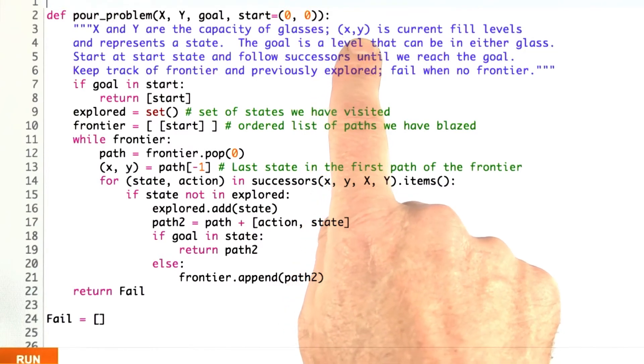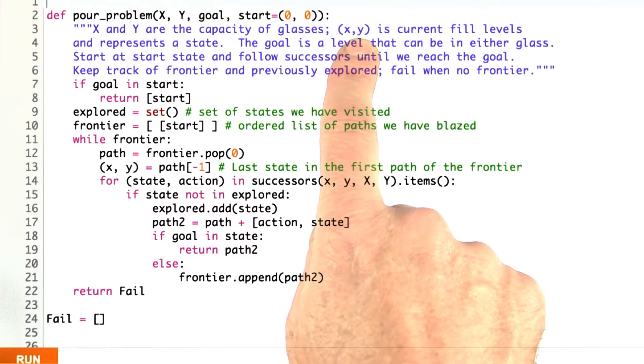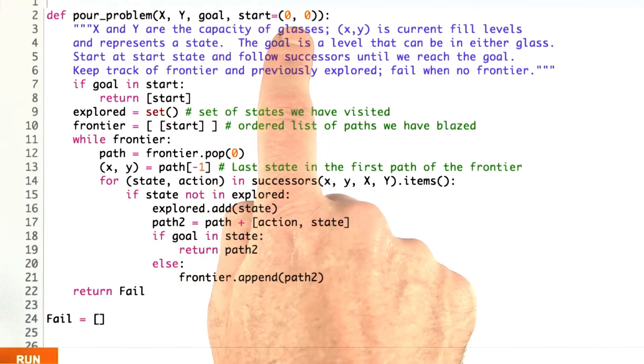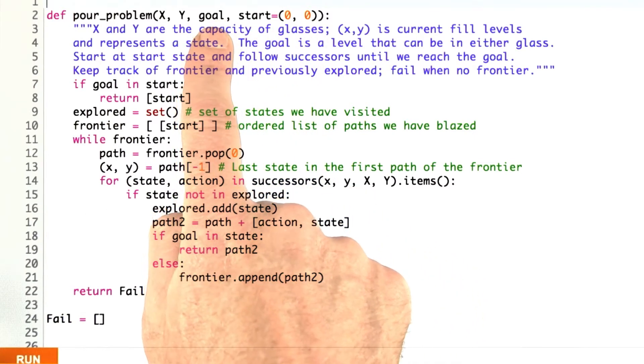I'm using lowercase x and lowercase y to indicate the current capacity of the glasses. Here I check and see are we done before we even get going. Did you give me a start state and said the goal is to have a glass with 0 in it? Then we're done before doing any actions.